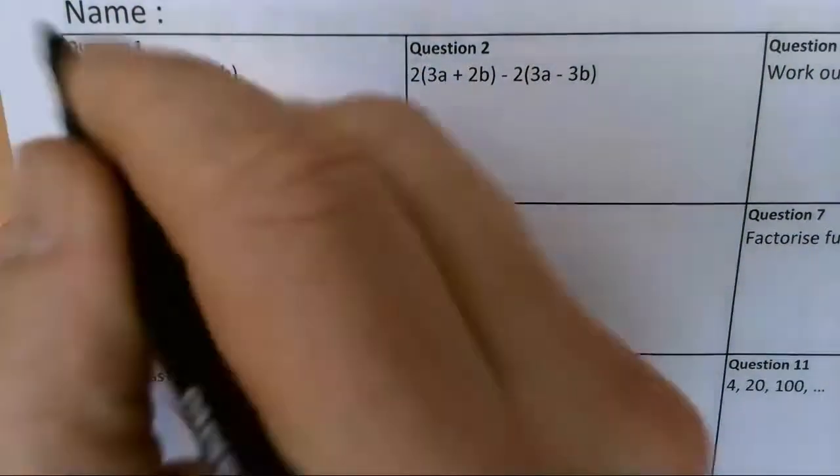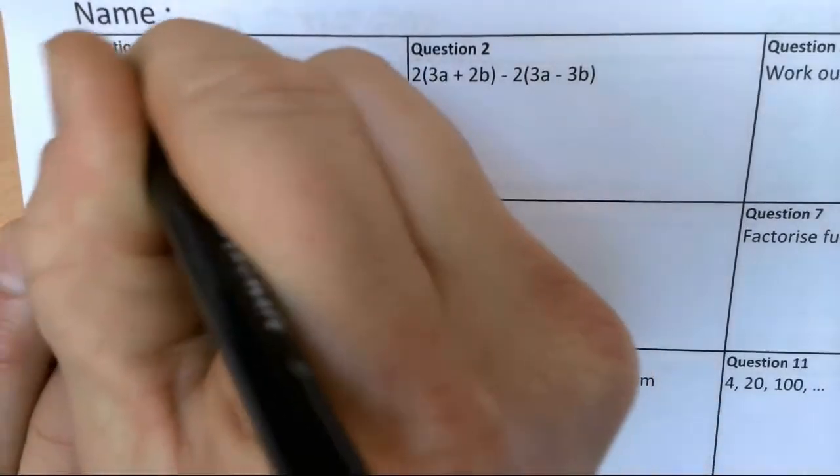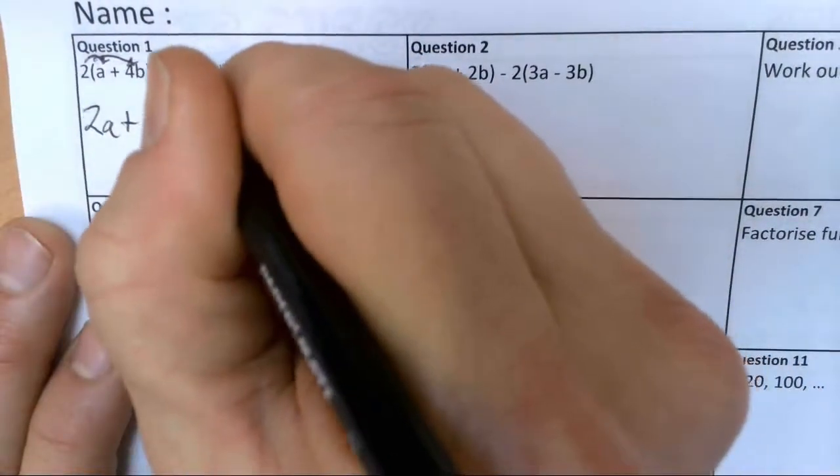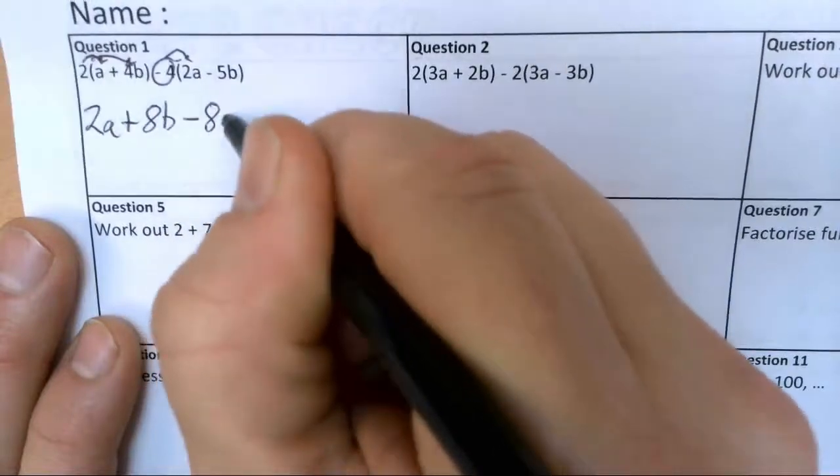Alright, question one. We've got a bit of expanding brackets. We've got 2a plus 8b, expanding both of those brackets. Now I have to be careful with the negatives. I've got minus 4 here, so minus 4 times by 2a gives me minus 8a.